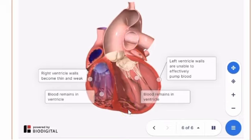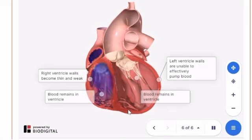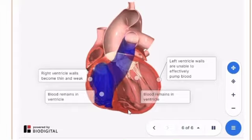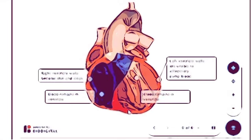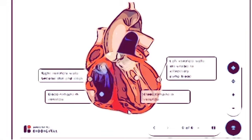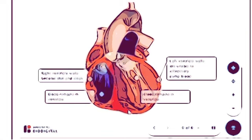Instead, blood remains in the ventricles and reduces the amount of blood that reaches the rest of the body. Factors that increase the risk for CHF include high blood pressure, coronary artery disease, metabolic syndrome, diabetes, and structural abnormalities of the heart. Patients with CHF commonly experience symptoms such as fatigue, weakness, shortness of breath, swelling of the lower limbs, decreased alertness, and a reduced ability to exercise.